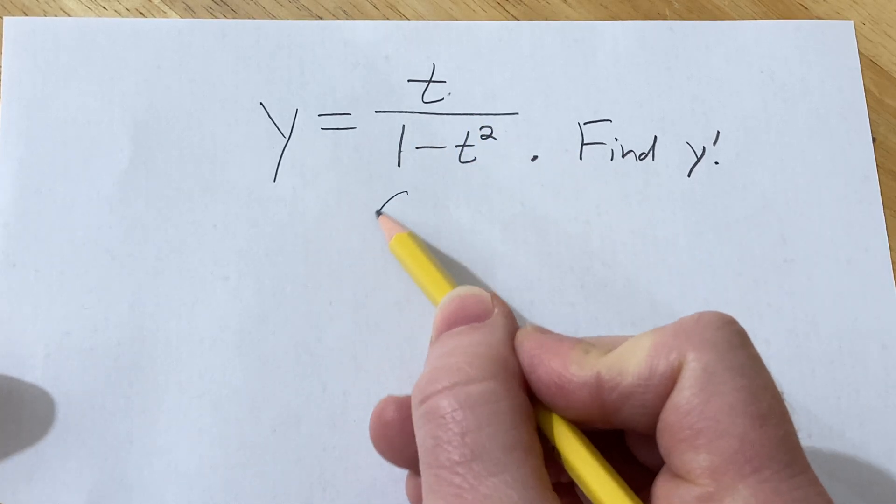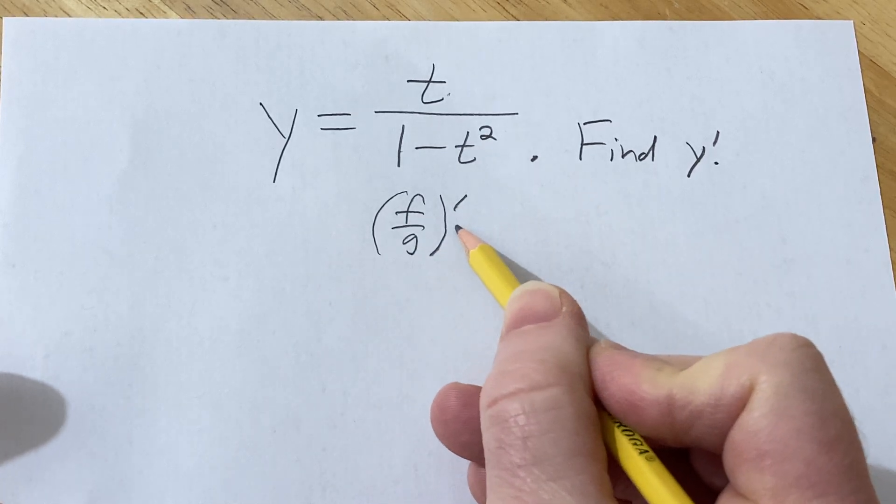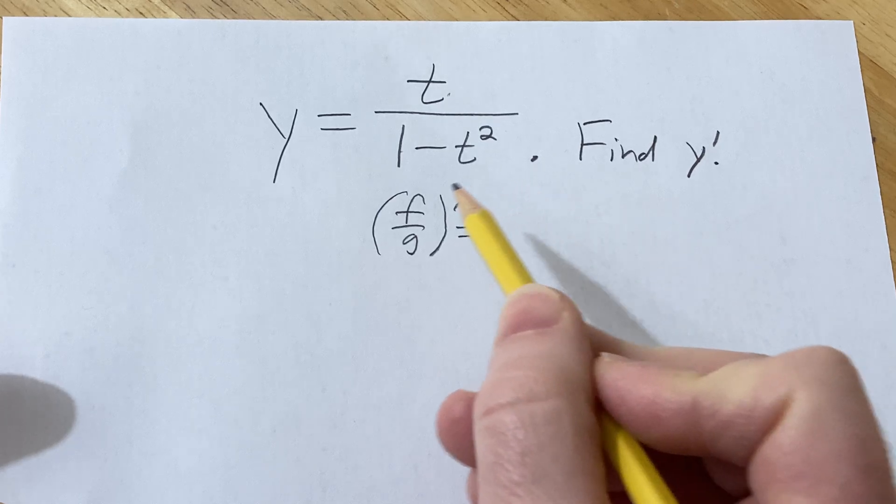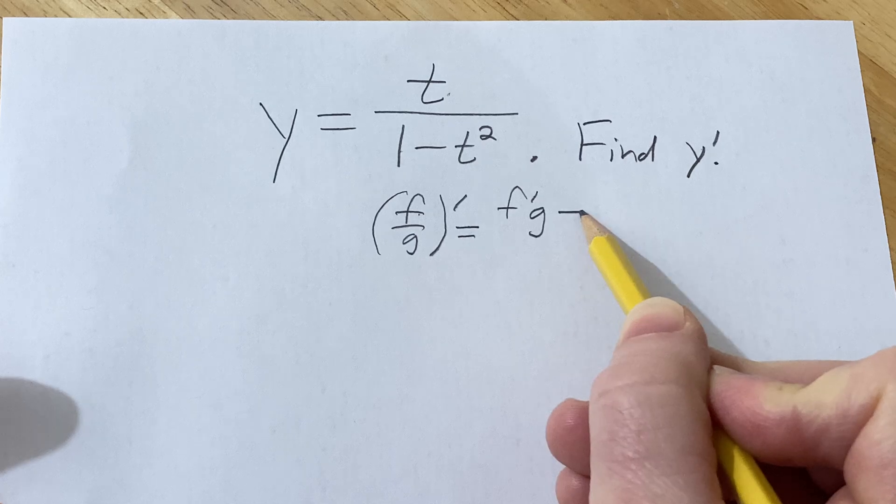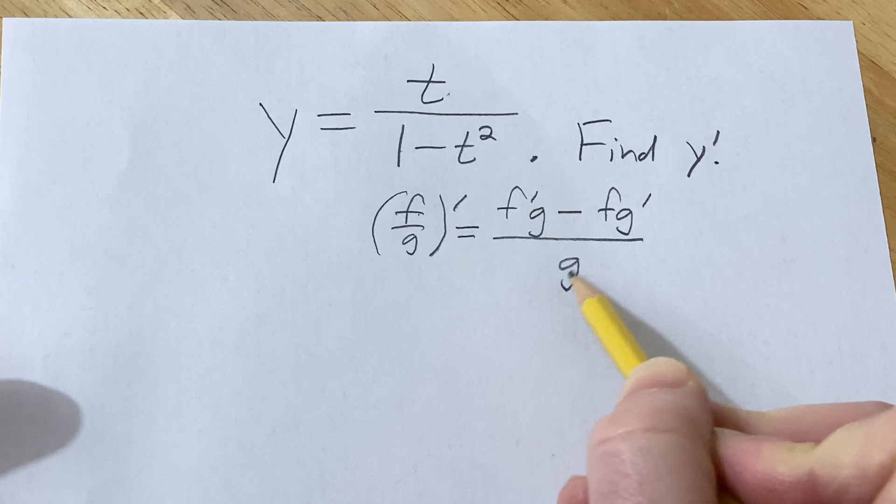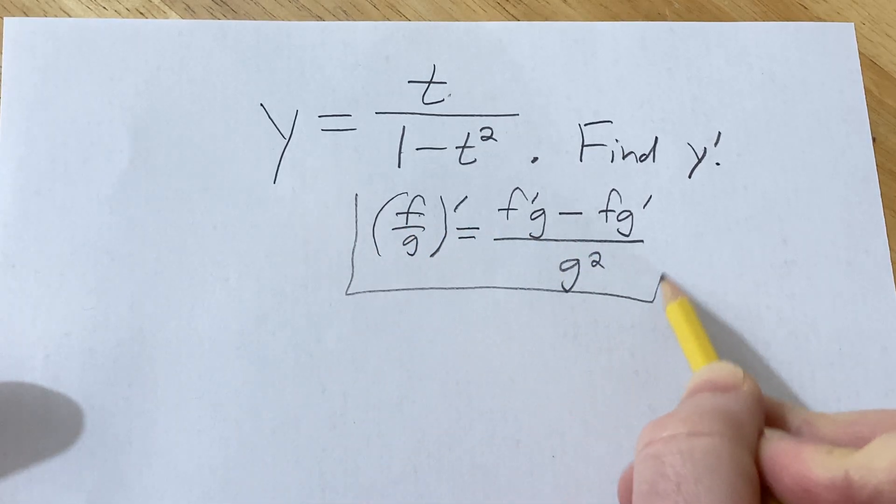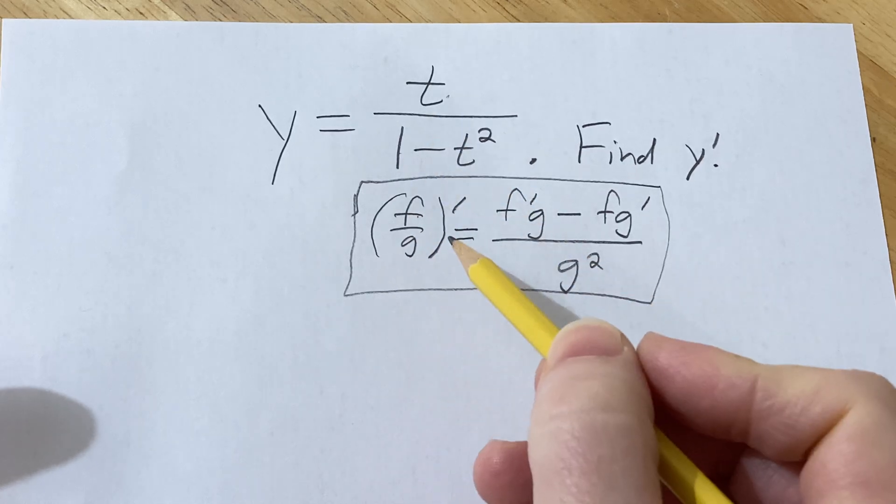So recall if you have a quotient, f over g, and you want to take the derivative of that. The quotient rule says that you take the derivative of the top times the bottom minus the top times the derivative of the bottom, and it's all over the bottom one squared. This is called the quotient rule, and it's a very powerful formula for finding the derivatives of quotients in calculus.